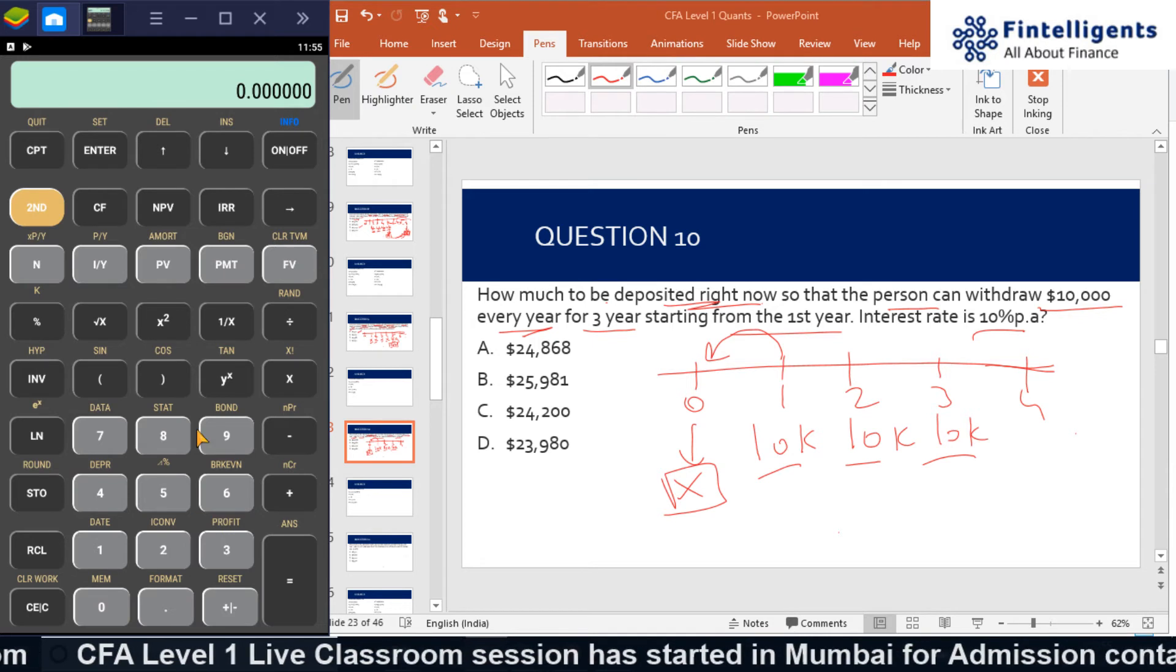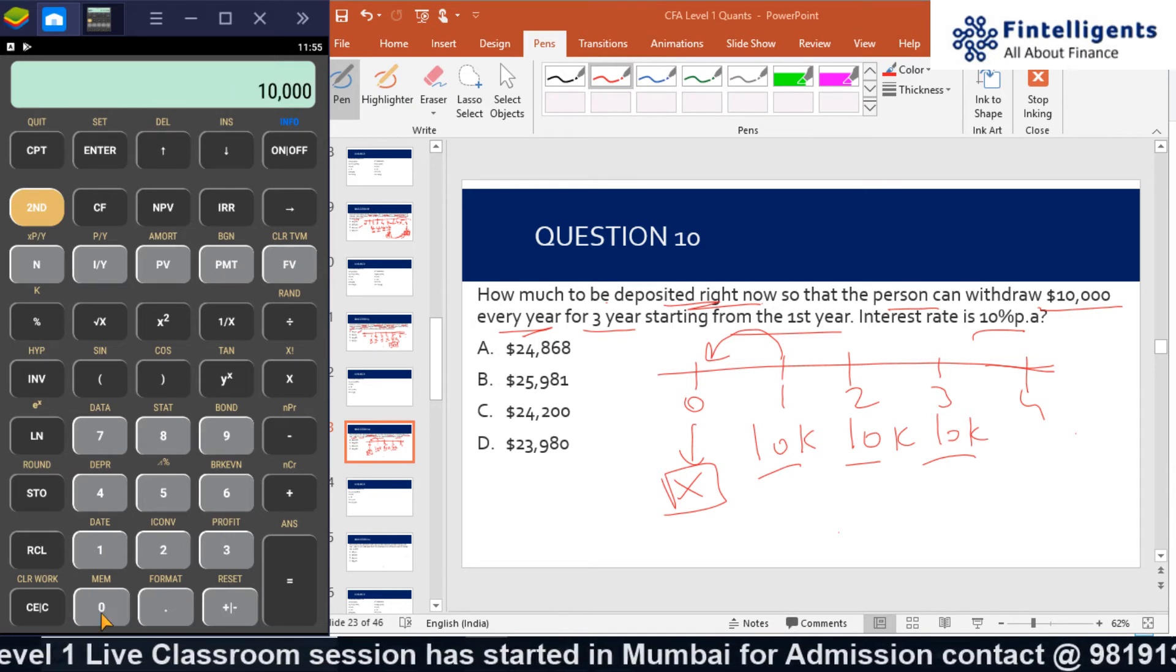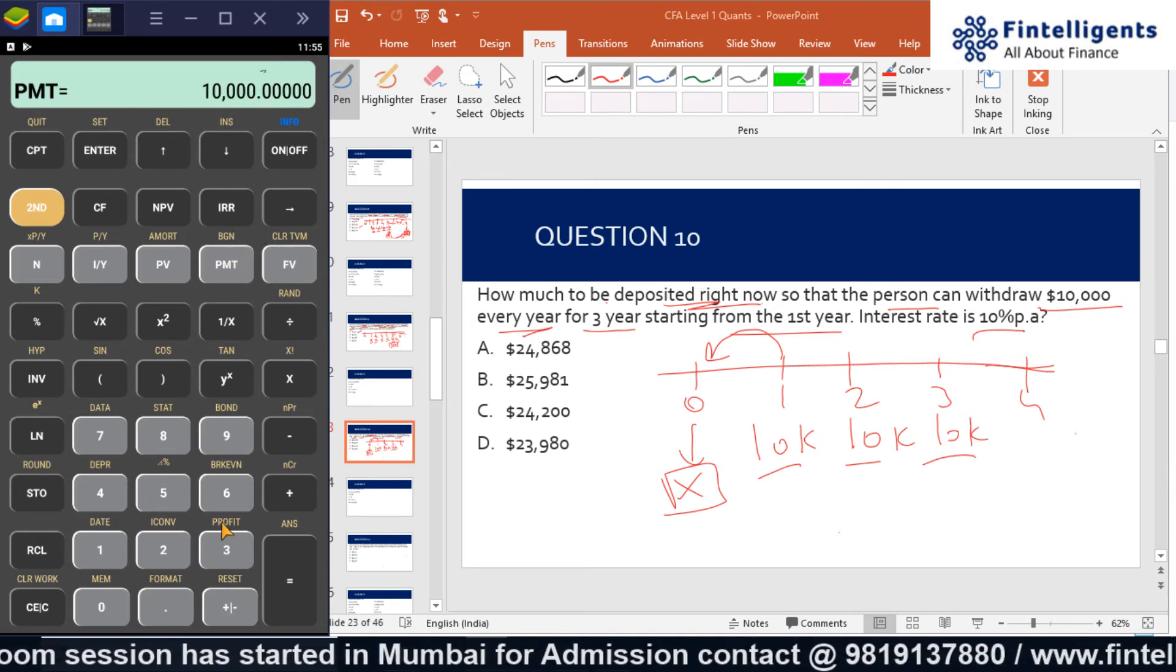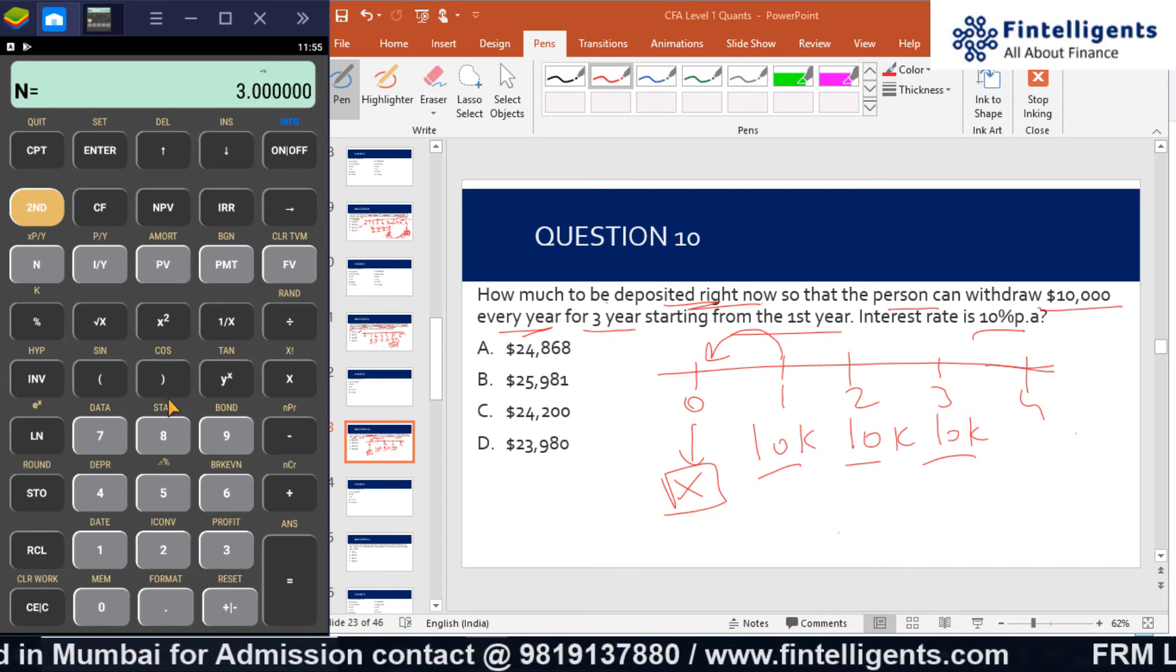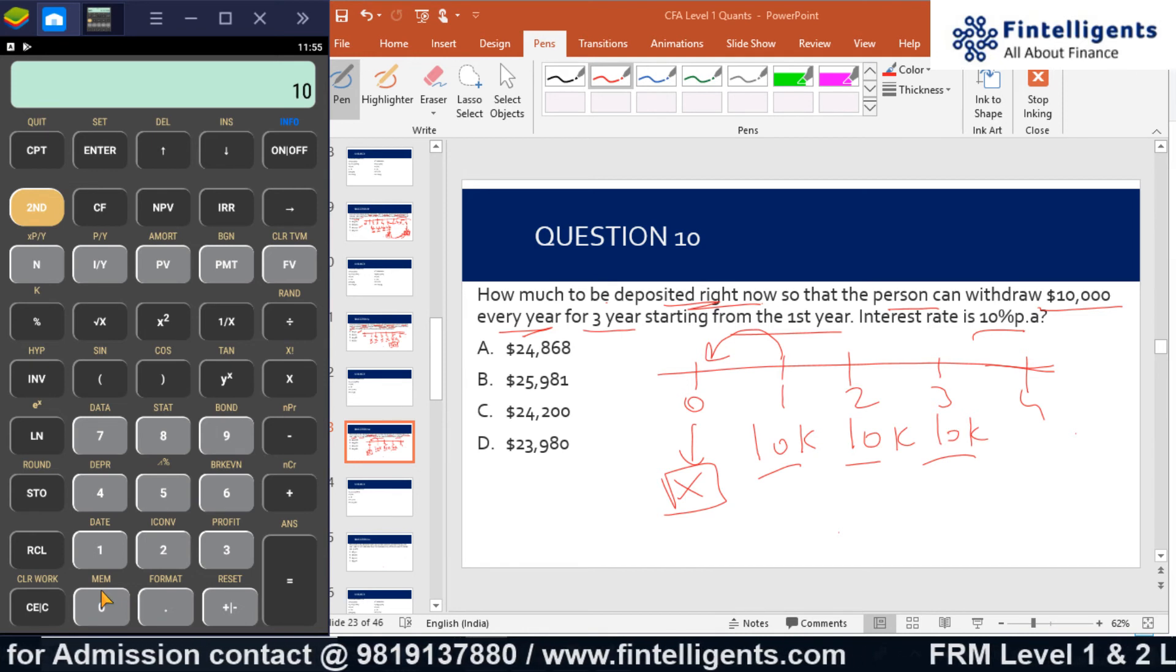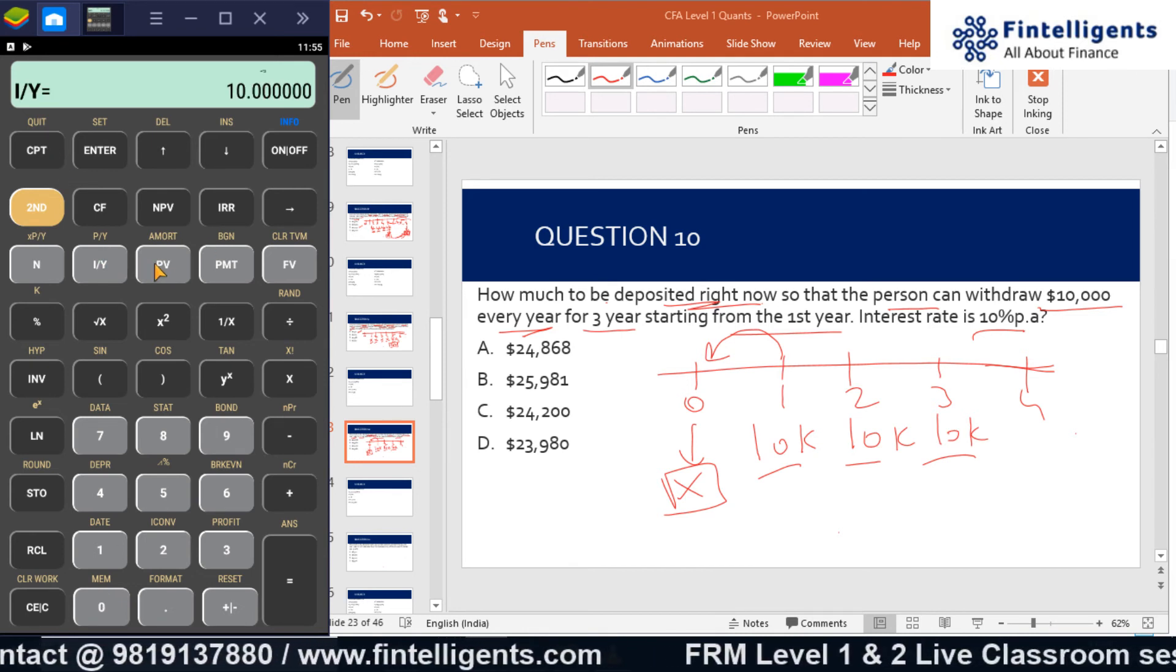I have 10,000 as my PMT, and this PMT occurs three times, so N equals 3. The interest rate is 10%, which is I/Y, and I will compute for PV.